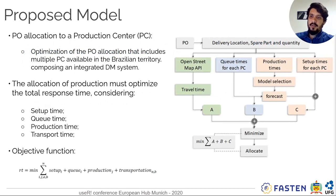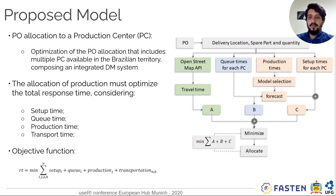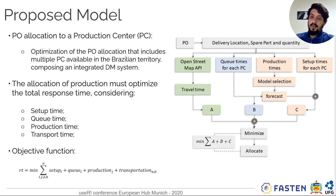The proposed model decides where each production order will be executed. For that, it considers forming variables: setup times, skill times, production times, and transportation times. For each production order, the objective is to minimize an objective function that is the sum of these variables.